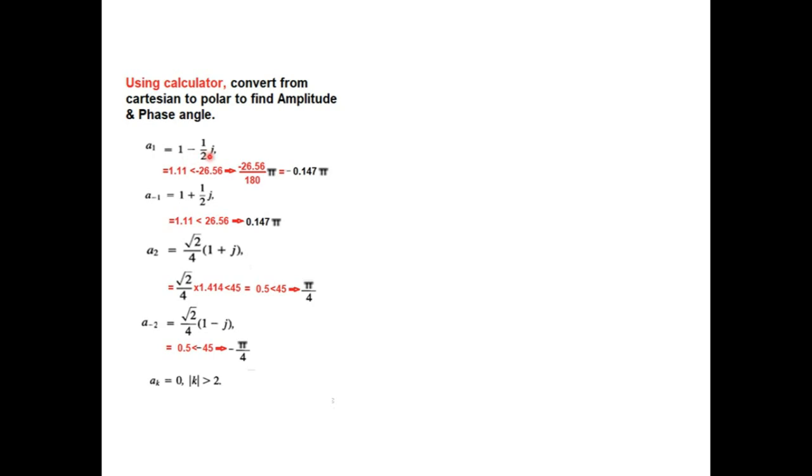This was the value for A1. So if you just use your calculator, this is in rectangular form, convert into polar form. So this becomes the magnitude and this is phase angle. Now this phase angle is in degrees. So we need to convert it into pi because the plot given in the book is in pi. So angle divided by 180 will make it in radians multiplied by pi.